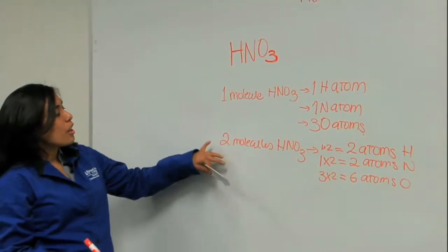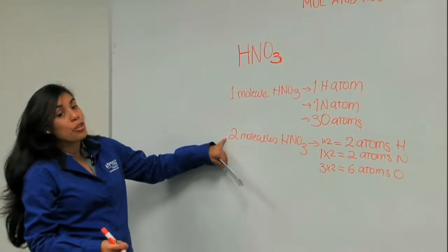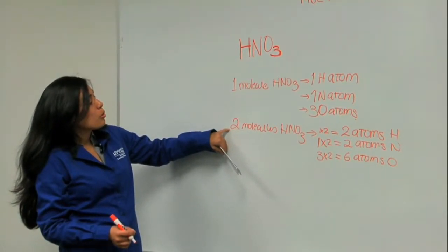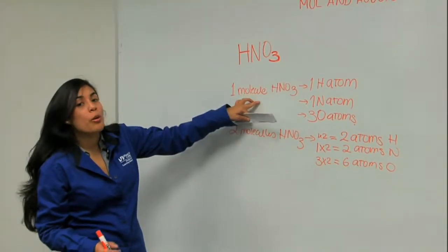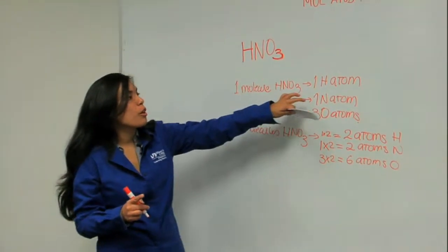You see the difference here? Each time I change the number of molecules, I have to multiply that number by each of these subscripts. And every time I talk about one molecule, I'm going to talk about atoms.